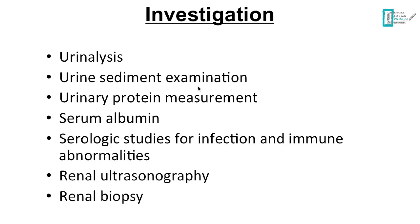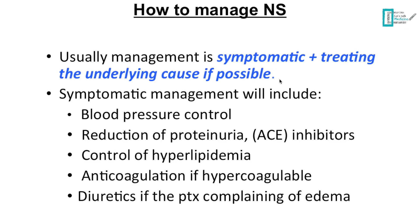Investigations include urine analysis, sediment examination, protein measurement, serum albumin, studies for infection and immune abnormality to look for primary or secondary causes, renal ultrasound, and biopsy. Management of nephrotic syndrome is usually symptomatic: hypertension, edema, and hypercoagulatory state are each managed. Proteinuria is reduced by ACE inhibitors, hyperlipidemia by statins, anticoagulants for hypercoagulatory state, diuretics for edema, and treatment of any underlying cause. If there are signs of chronic kidney disease or failure, hemodialysis will be considered.